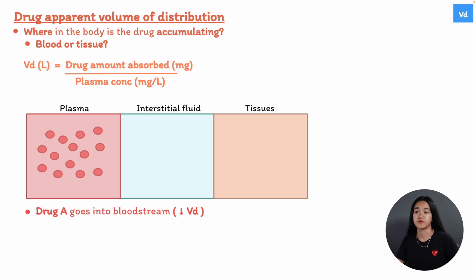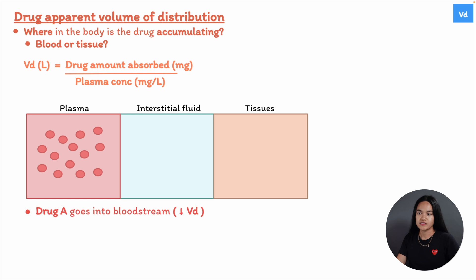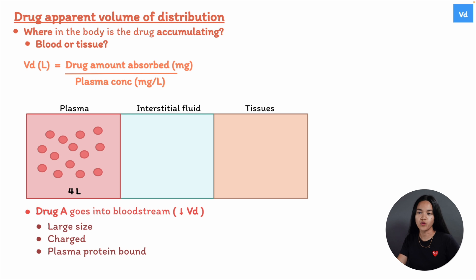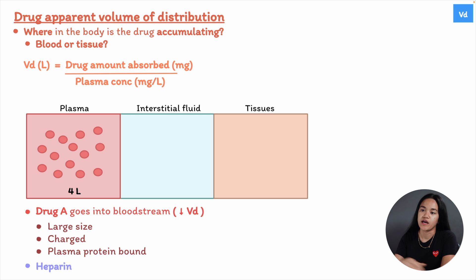Suppose we have Drug A that remains in the bloodstream — it will have a low volume of distribution because it's concentrated in the plasma and can't leave to spread throughout the body. The drug would have a high molecular weight, be charged, or be heavily protein bound, meaning it can't pass through the capillaries. This drug will have a Vd equivalent to the volume of plasma — about 5% of body weight, theoretically around 4 liters. An example is heparin, which helps prevent clots in blood vessels, and it makes sense why it's retained in plasma.